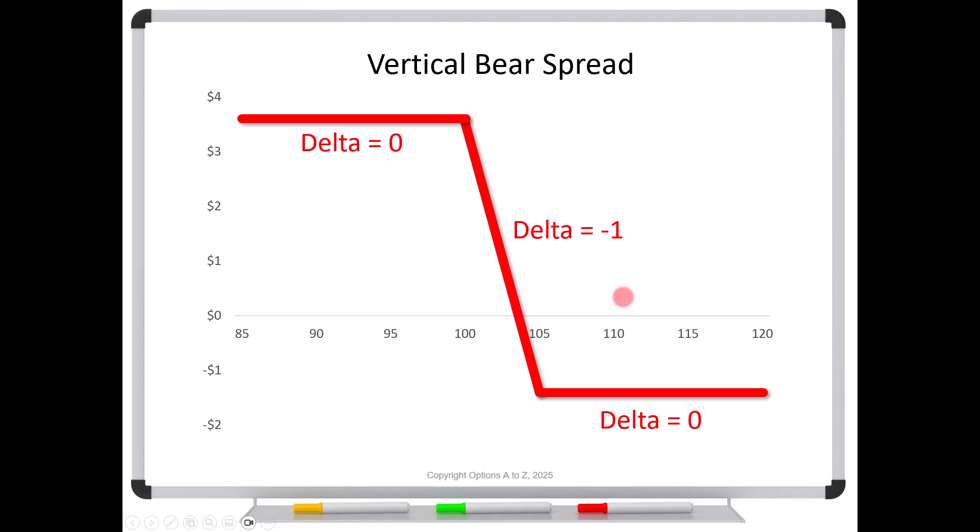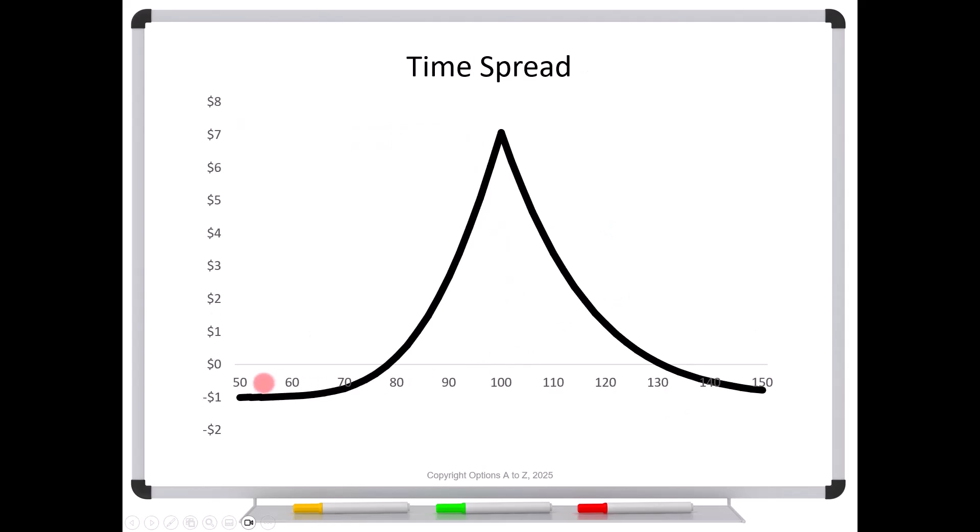However, when you look at a time spread, we don't see that. Again, we get positive deltas on this side, but it's curved. And we get negative deltas on this side, but it's curved. It's not a straight line. And that's really the question is, why, if this is an expiration graph, are we not getting straight lines?